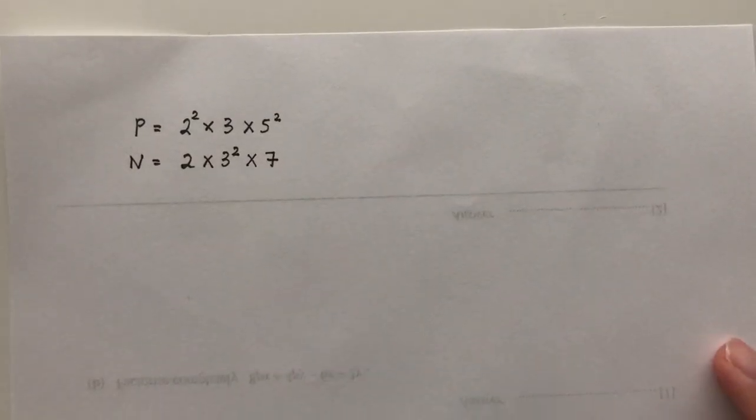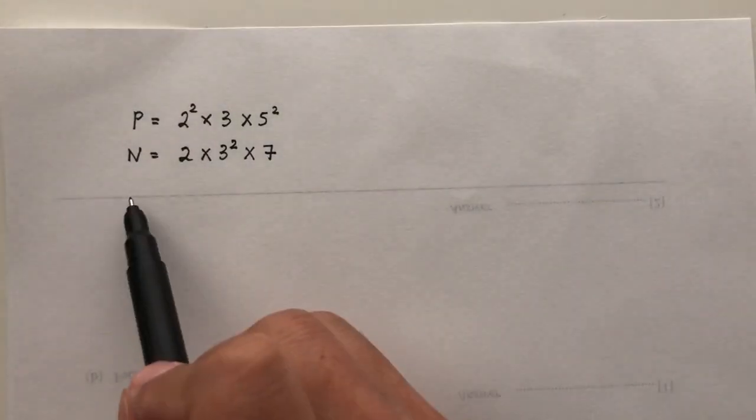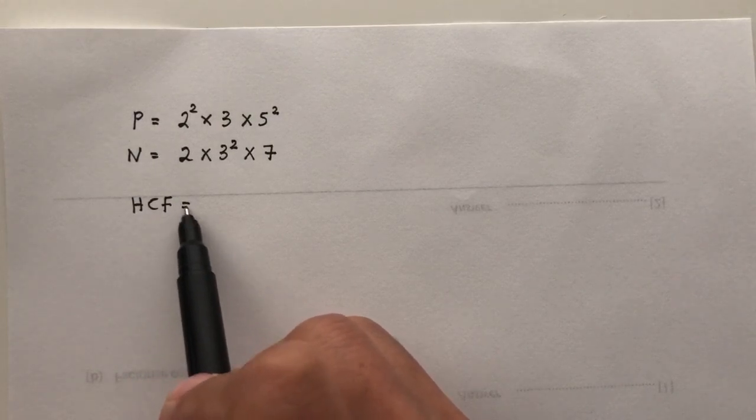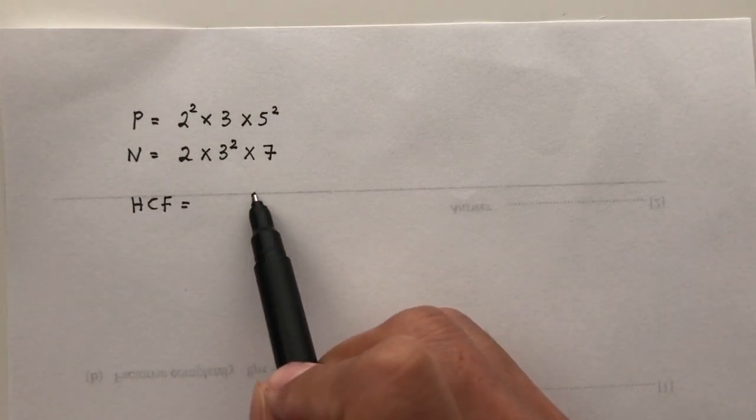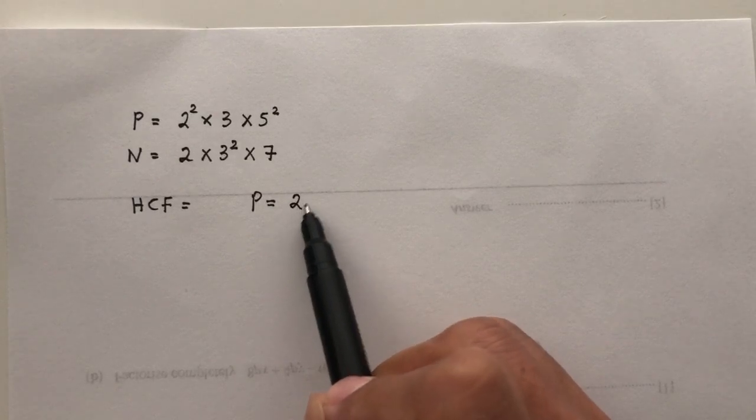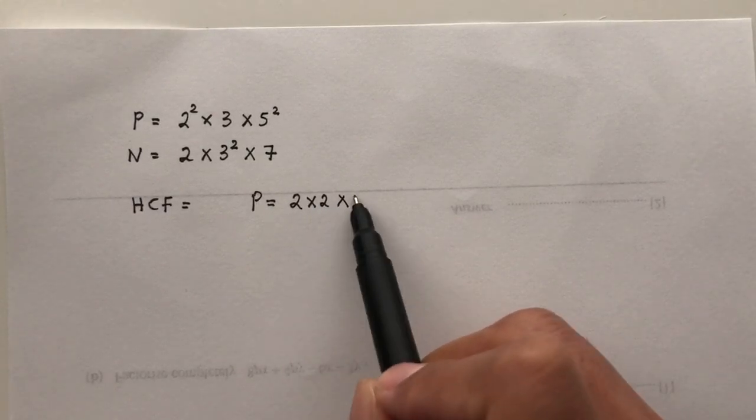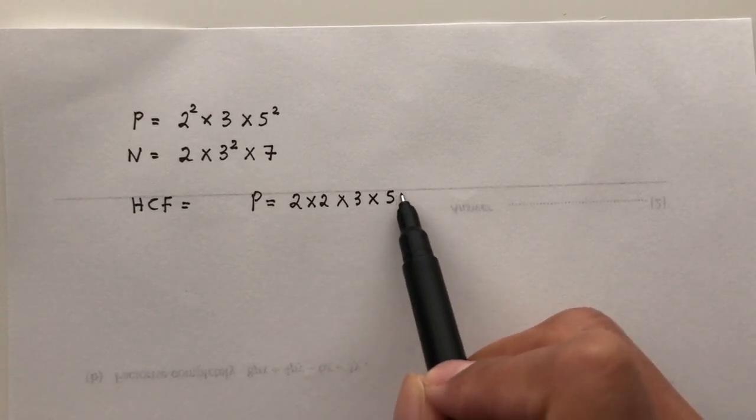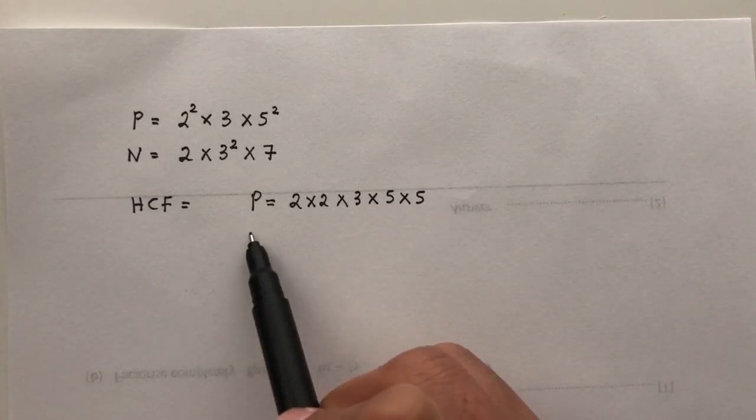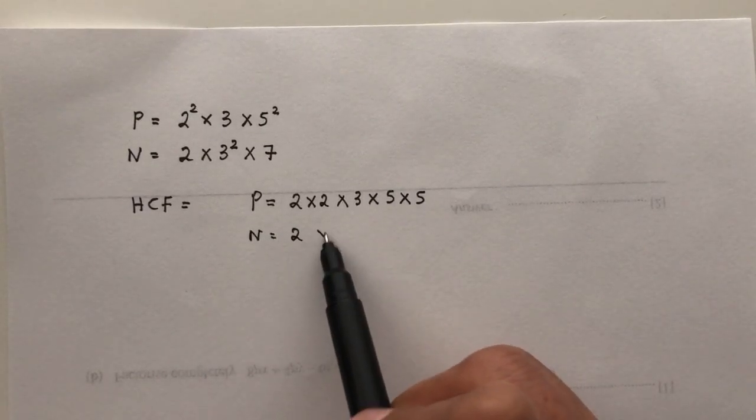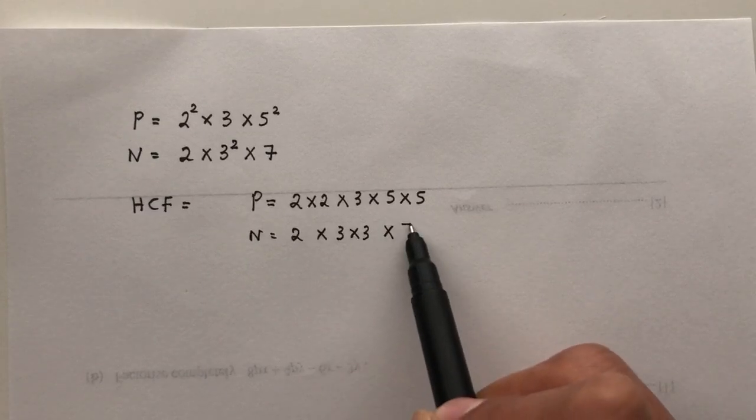So my question is find the HCF, highest common factor. How do you find that? So you look at P, list out all the elements. You have 2 times 2 times 3 times 5 times 5, and you have 2 times 3 times 3 times 7.